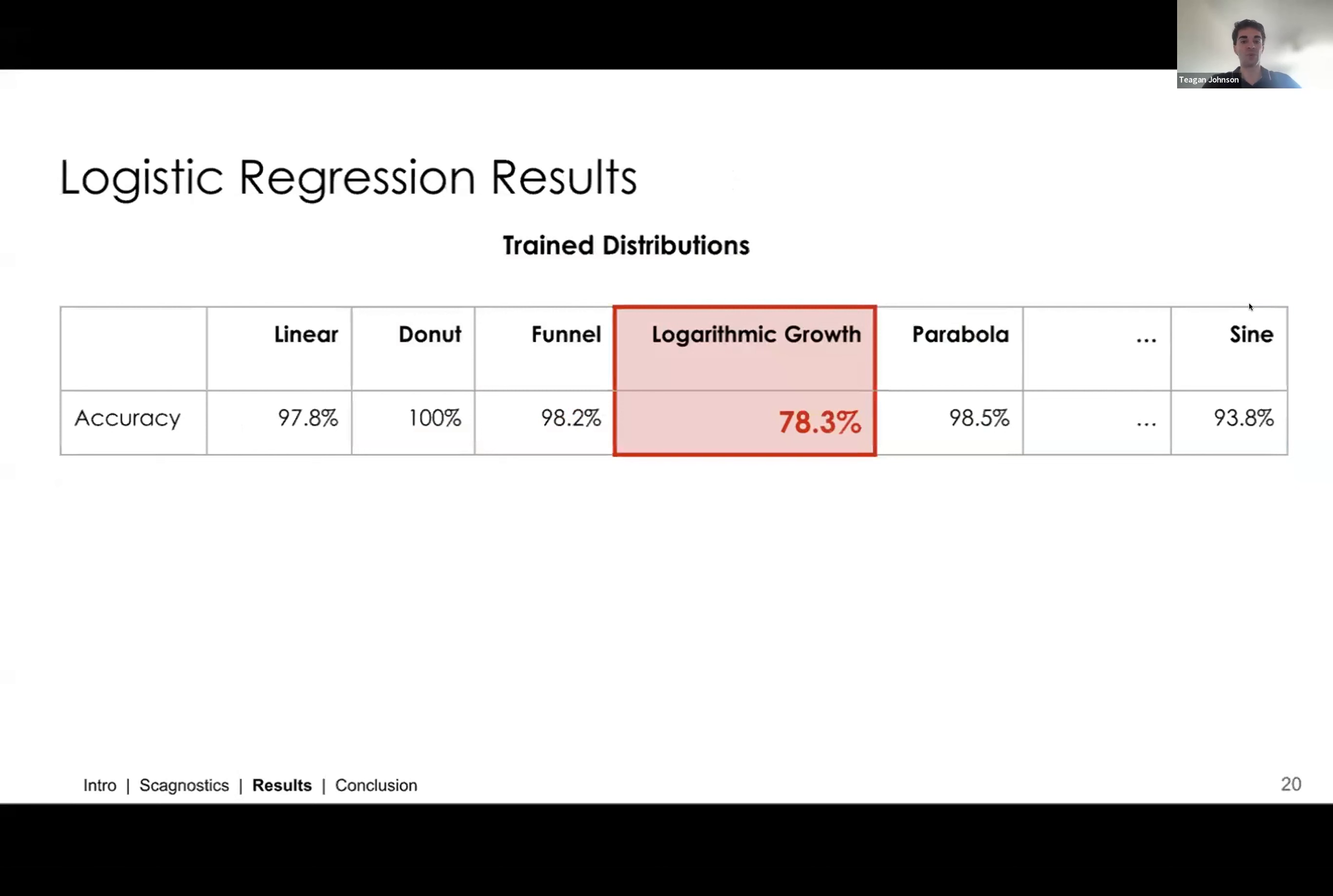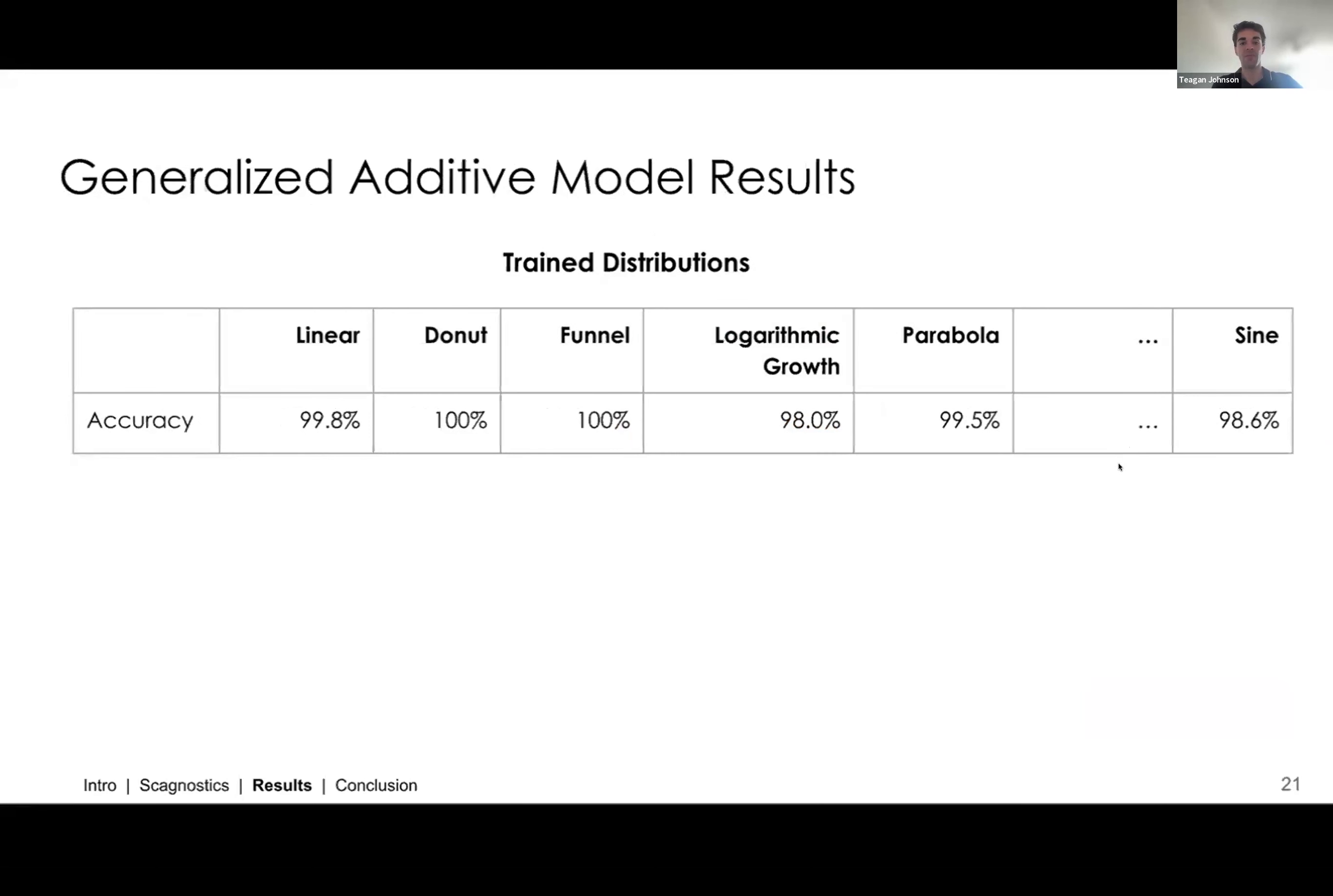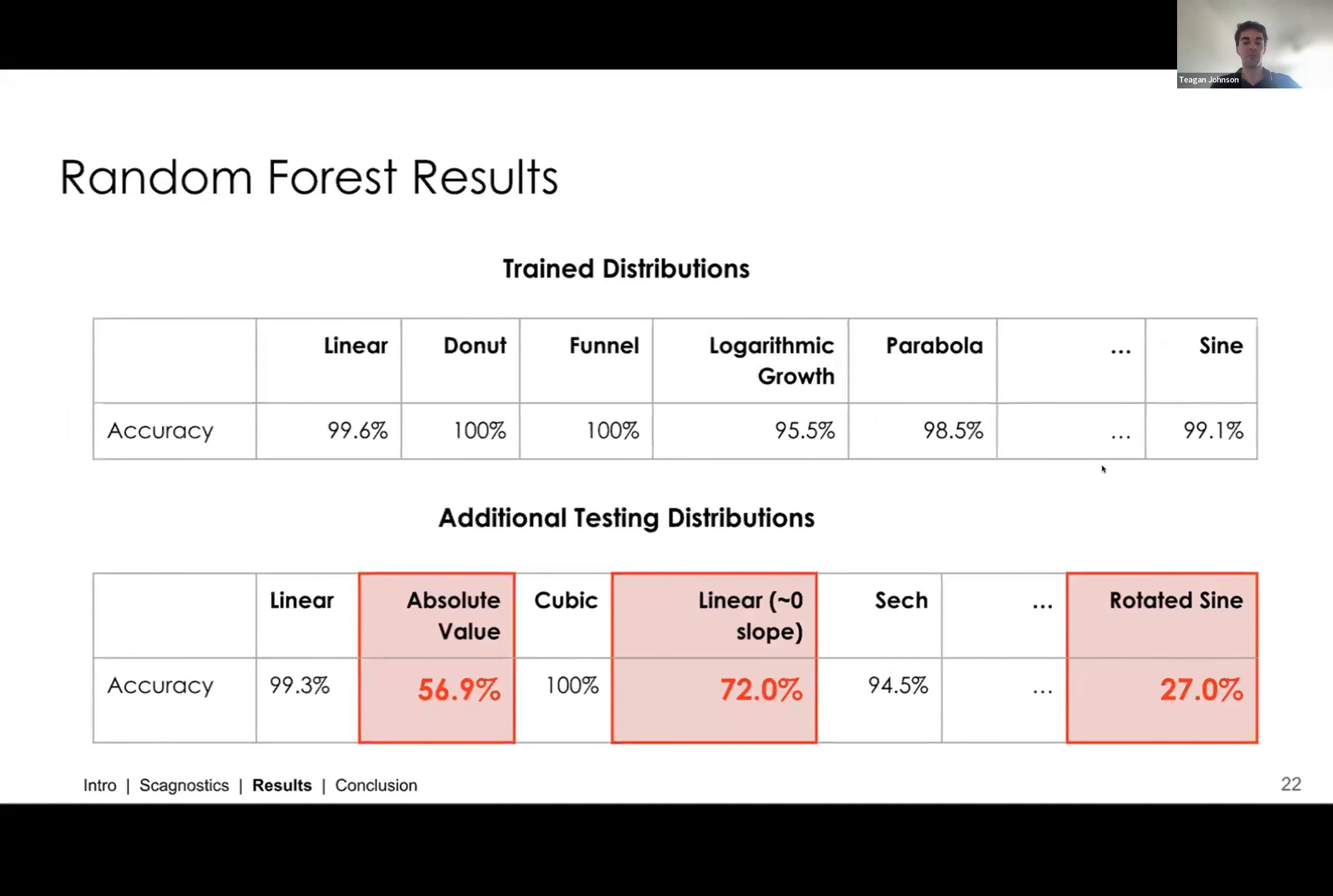So to look at this further, we broke down accuracy by plot type for each of our three models. So we wanted to see what the problematic distributions were, what distributions our models were struggling with. For the logistic regression model, we saw that logarithmic growth was the lowest accuracy. And then when we moved on to the six additional distributions, we saw that absolute value, linear near zero slope, and rotated sine distributions were the most problematic. If we go on to GAM, we can see that the trained distributions were good across the board. But then when we added those additional testing distributions, we saw the same three plots causing problems. And then it was a similar story for the random forest model.